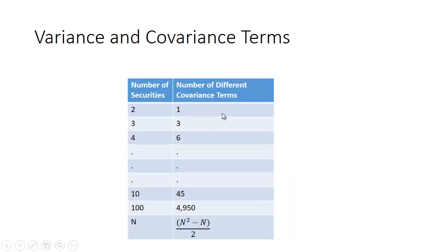Here is a table showing the number of securities versus the number of covariance terms. With two securities you have one covariance. With three securities you have three covariance terms. With four securities you have six. If you went up to ten securities you'd have 45 covariance terms — ten squared minus ten gives you 90, divided by 2. With a hundred securities in your portfolio you'd have 4,950 covariance terms. You can see that covariance starts to become far more important than variance.